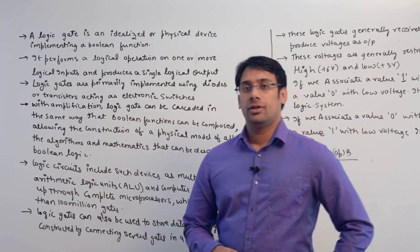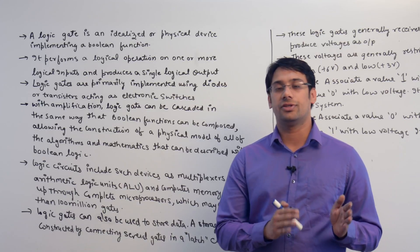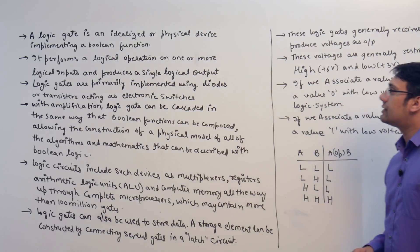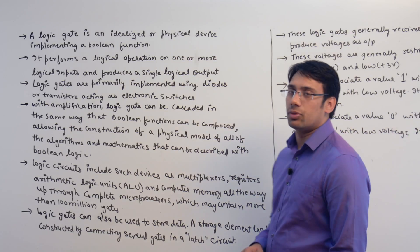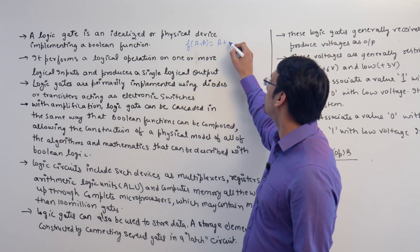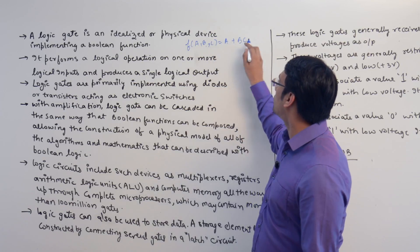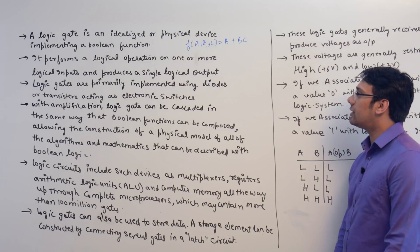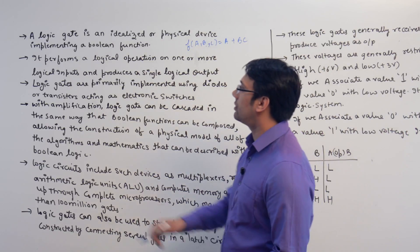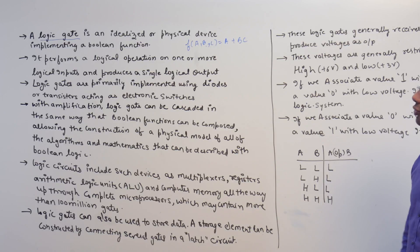A logic gate is an idealization or physical device which implements a Boolean function. For example, a function of three variables a, b, c equal to a + bc is a Boolean function. We can represent this Boolean function with the help of an electronic circuit, and that electronic circuit will use logic gates. So these logic gates are used to implement Boolean functions.